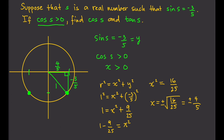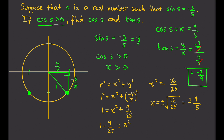We are almost done. Cosine of s equals the x-coordinate, which is four-fifths. For tangent s, tangent s equals y over x: negative three-fifths divided by four-fifths. The fives cancel out, giving us negative three-fourths. And that's it — that's all we needed to do.